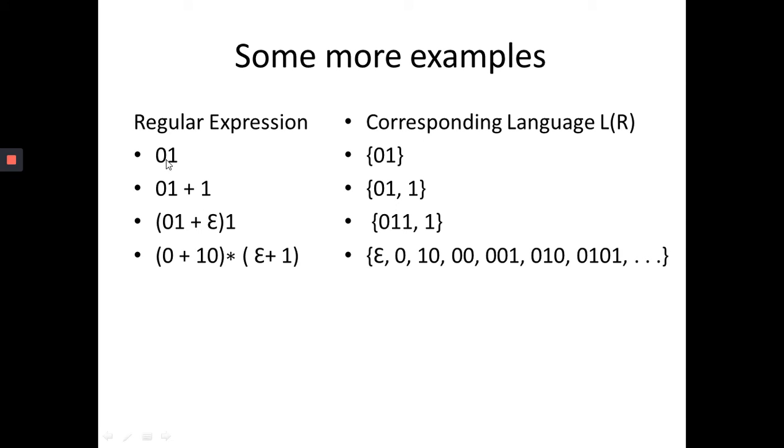More examples, here we have written the other way. If a regular expression is given, what can be the corresponding language? If I write regular expression as 01, the language will be {01}. If my regular expression is 01 or 1, my corresponding language will be {01, 1}, because it is giving us what comprises of the language.